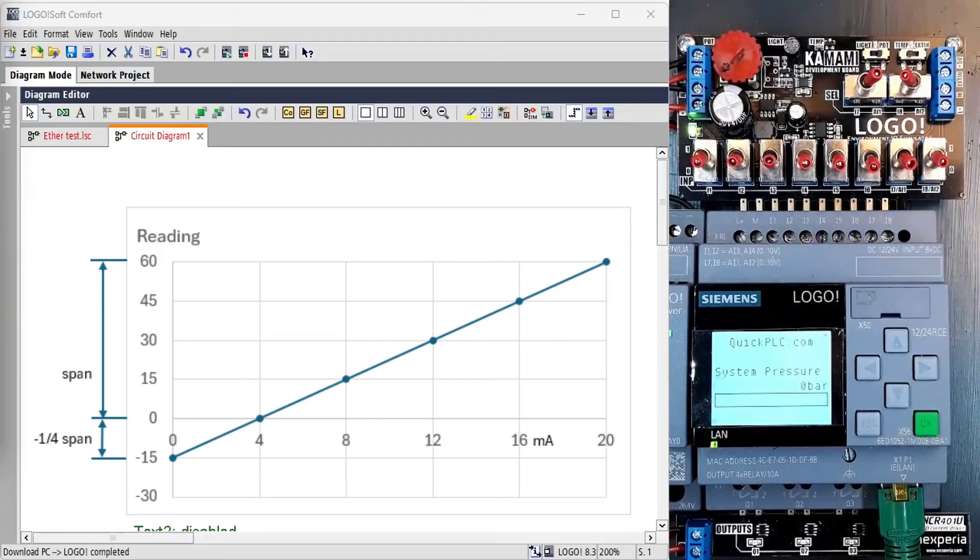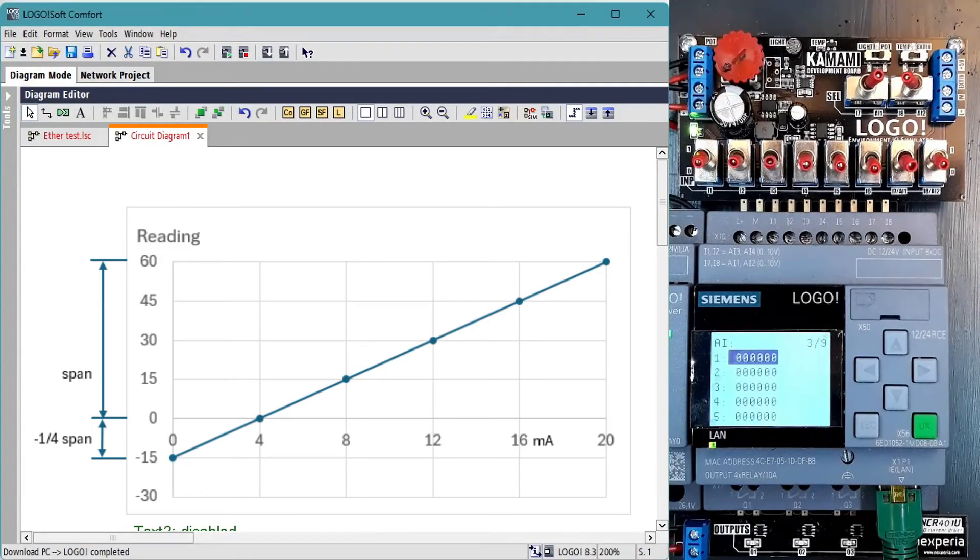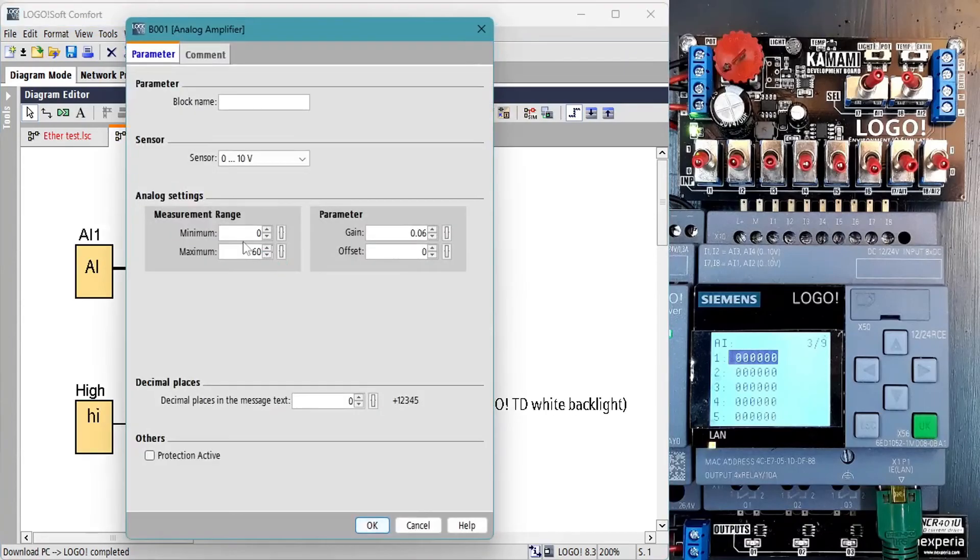When 4 milliamp indicates a reading of 0 then the offset is simply minus a quarter of the span. In this case the span is 0 to 60 so the offset is minus 15 bar. We program that into the analog amplifier, download and test.